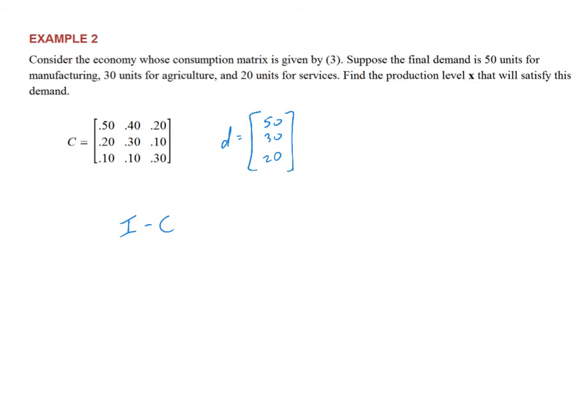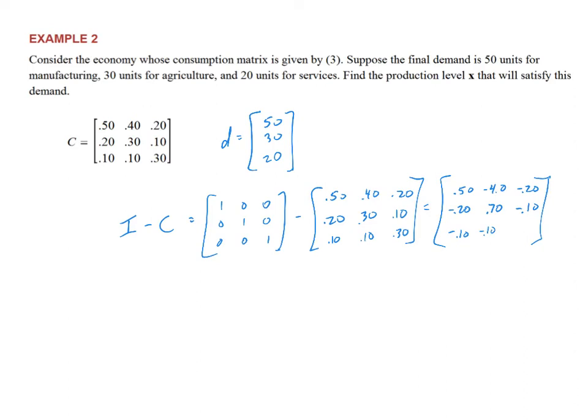Because we have the vector x appearing two times in the model, I need to subtract and factor in order to solve for x. So I minus C, we're going to take a three by three identity, 1, 0, 0, 0, 1, 0, 0, 0, 1, and subtract the consumption matrix. 0.50, 0.40, 0.20, 0.20, 0.30, 0.10, 0.10, 0.10, 0.30. And think about what's going to happen with that subtraction. Everything off the diagonal is negated. Everything on the diagonal is subtracted from 1. So 0.50, negative 0.40, negative 0.20, negative 0.20. This would be positive 0.70, negative 0.10, negative 0.10, negative 0.10, and 0.70. So that is my I minus C matrix.